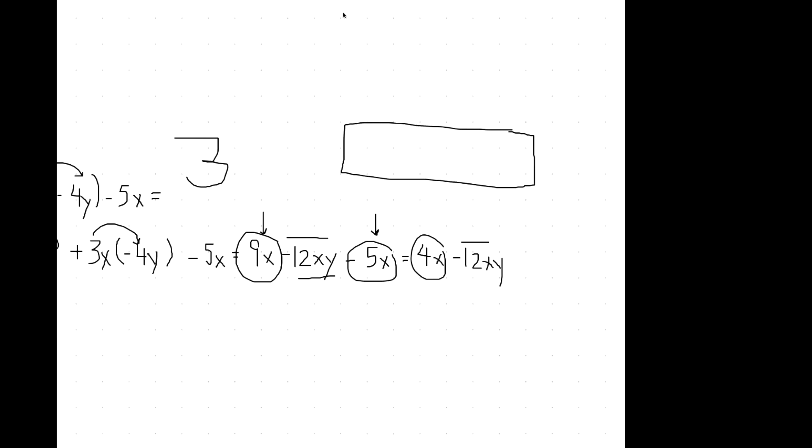So that's what we call like terms—the exponents of the variables have to be the same for the like terms. So if you have x squared, then they all need to have x squared. If x squared y squared, then they all need to have x squared y squared.